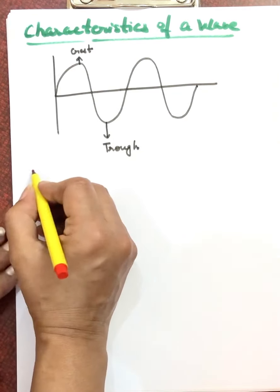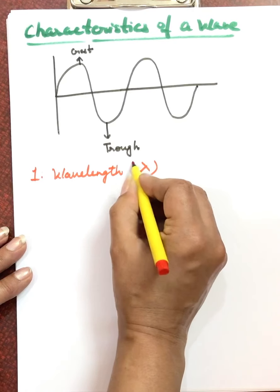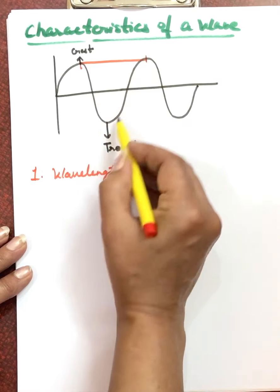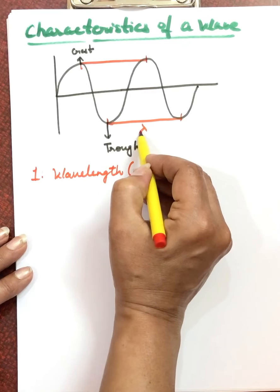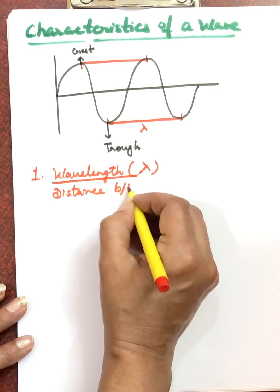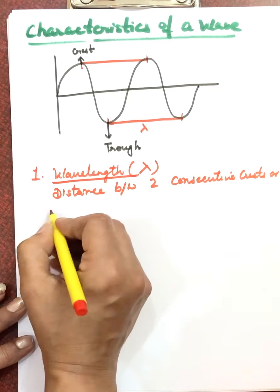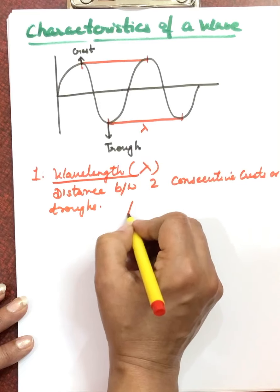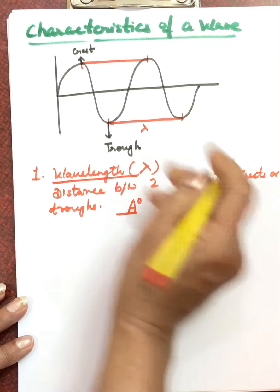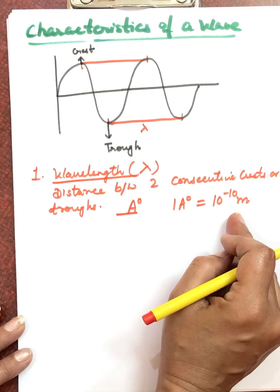The first characteristic of a wave is wavelength, denoted by the symbol lambda (λ). Wavelength is the distance between two consecutive crests or two consecutive troughs. It is expressed in angstroms, where one angstrom equals 10⁻¹⁰ meters. Since it is a small distance, we use the small unit of angstrom.